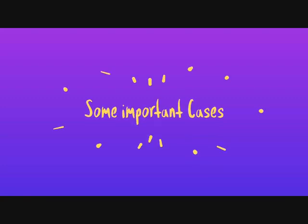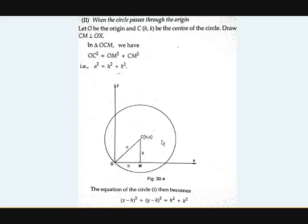There are some special cases. The first case is when the circle passes through the origin. Let O be the origin and C be the center at h comma k.